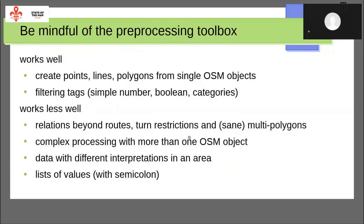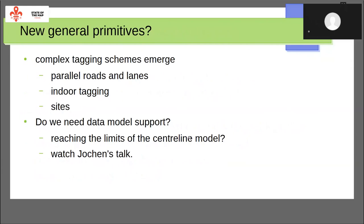Also, semicolon-separated lists of values have become something of a standard, and yes, they're still not supported by all tools, but I think that's the fault of the tools too. The question is: do we need new primitives? We have complex tagging schemes that we want to process — lane tagging from parallel roads, indoor tagging, layers of different data directly on top of each other, and things like sites for universities. We also have the list of values, which we need more standards around.